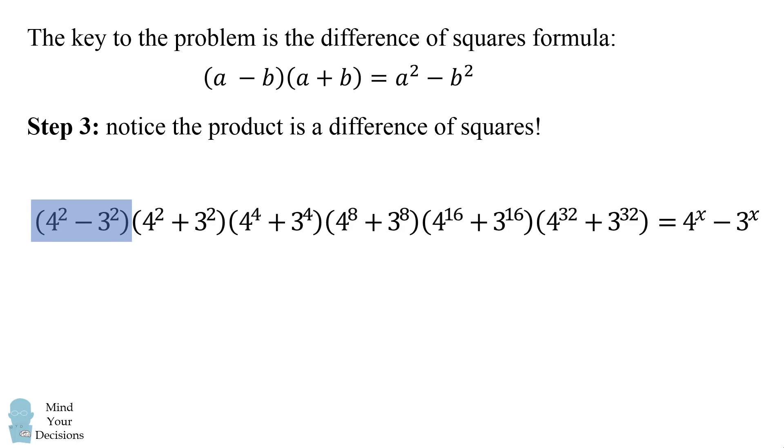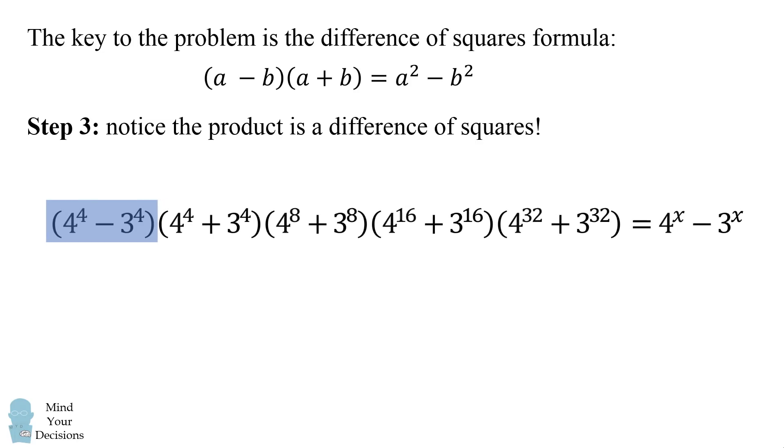And now we have a domino effect on the rest of the terms. Look at the first two terms in this product. We have the quantity 4 squared minus 3 squared times the quantity 4 squared plus 3 squared. This is another difference of squares. So we get 4 to the power of 4 minus 3 to the power of 4.